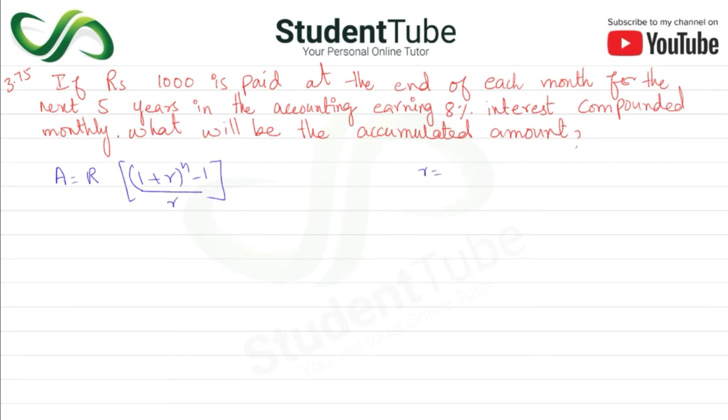So small r is i upon m. i is 0.08 divided by m, compounded monthly means 12. When we divide, we get 0.007. n is equal to m multiplied by t, so n is 5 years, 5 multiplied by 12, so n is 60.